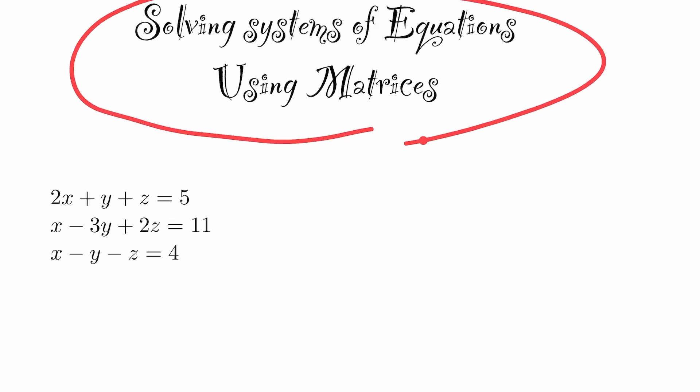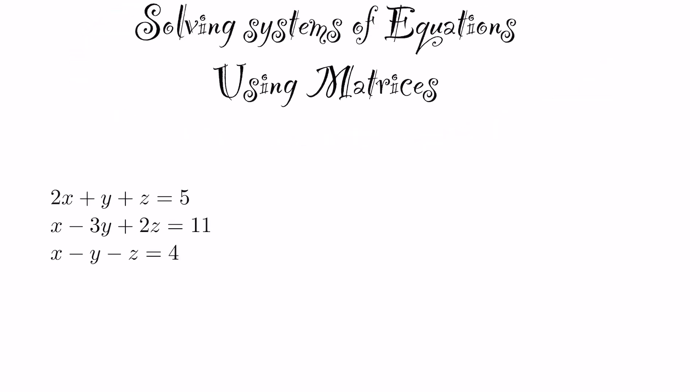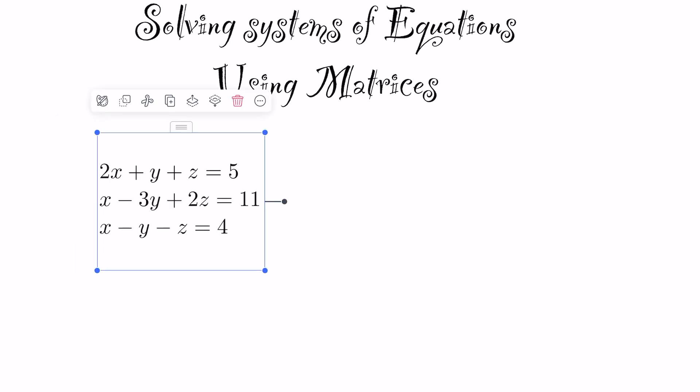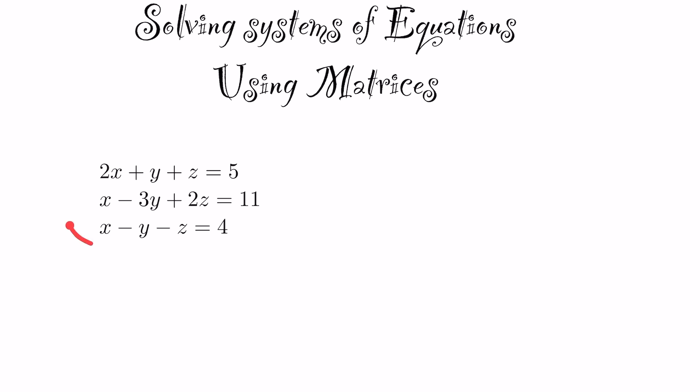In today's lesson we're going to be looking at solving systems of equations using matrices. This is typically used for three or more variables and three or more equations. When solving these systems, you end up repetitively rewriting the x's, y's, z's, and equal signs. By using a matrix, you can reduce this quite a lot — cutting the tediousness and focusing on the numbers, which dictate everything.